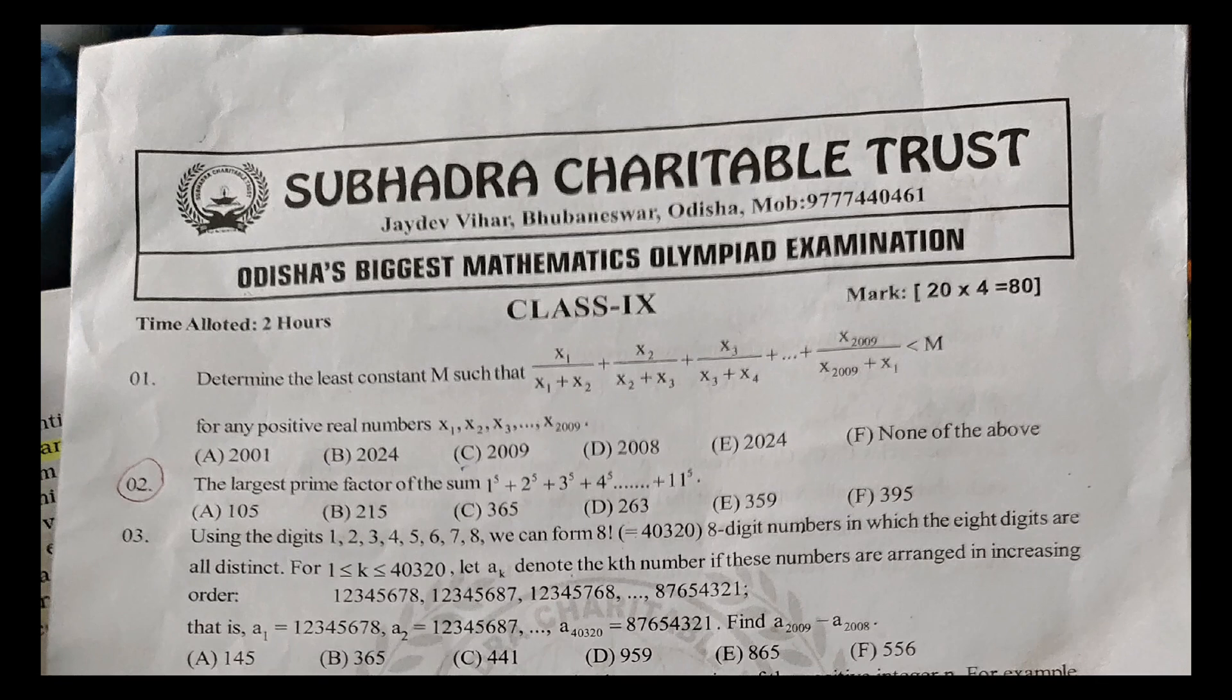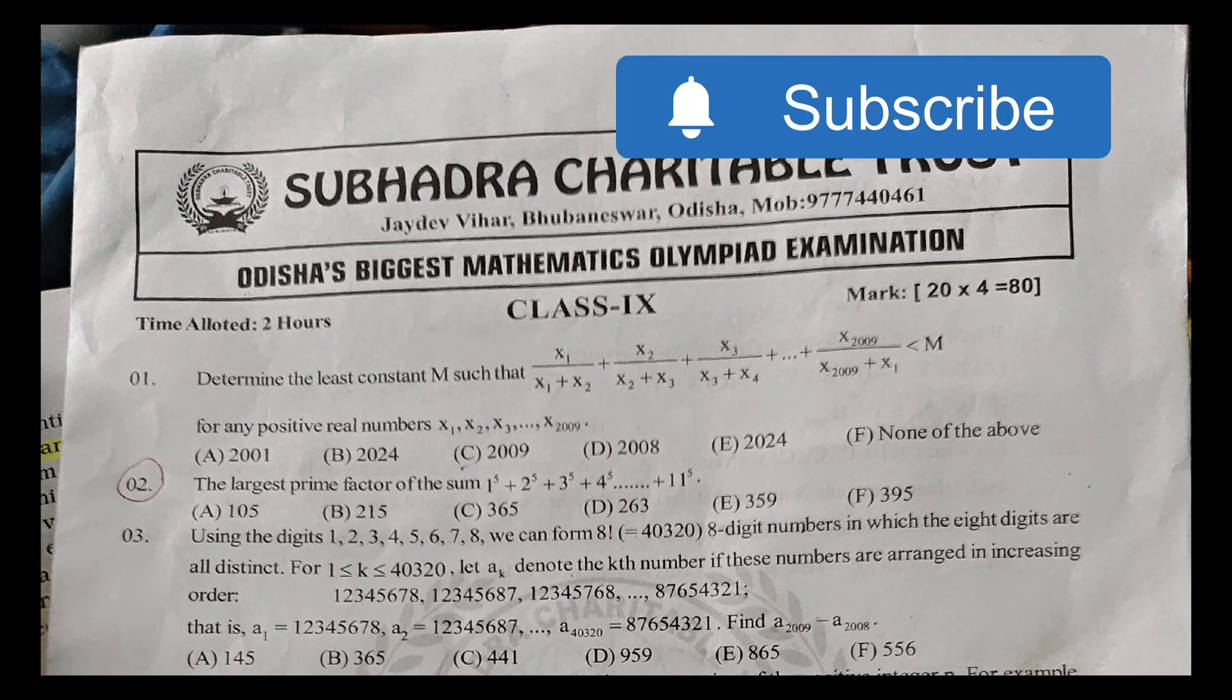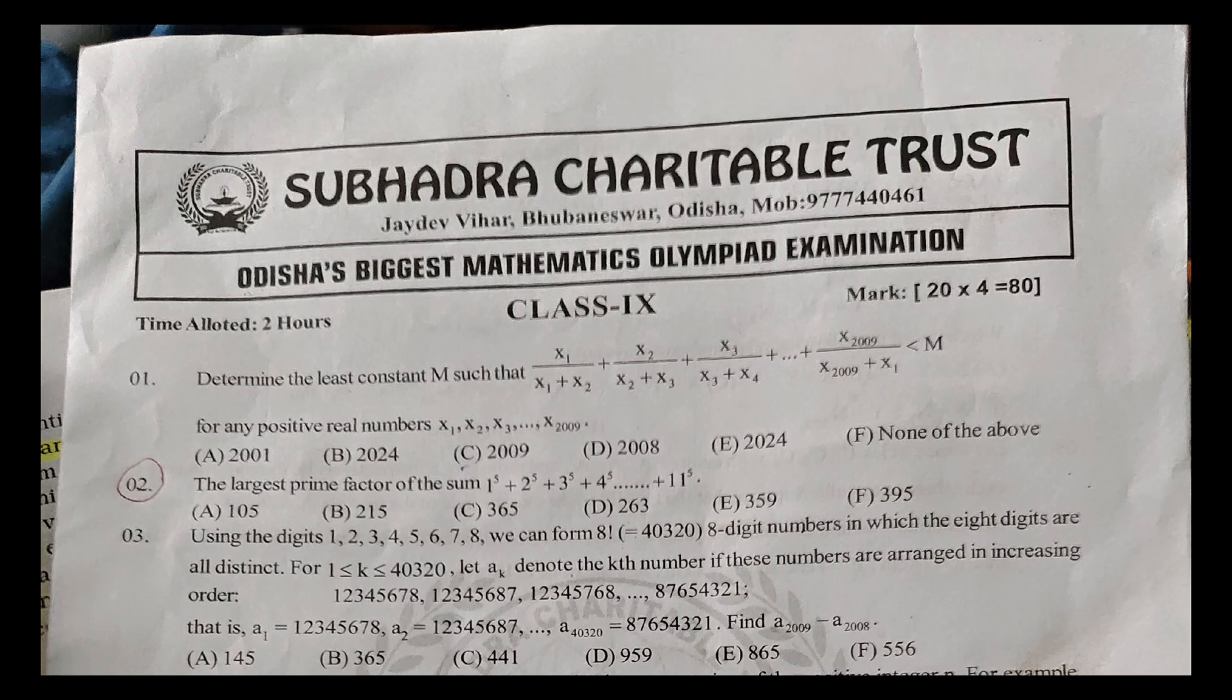I am going to start the number. The question is: determine the least constant M such that the equation x1/(x1 + x2) + x2/(x2 + x3) + ... + x2009/(x2009 + x1) is less than M for any possible real numbers x1, x2, x3, ... x2009. The answer is C, 2009.